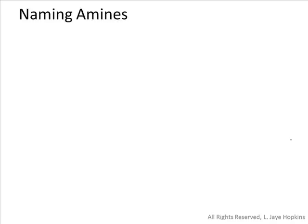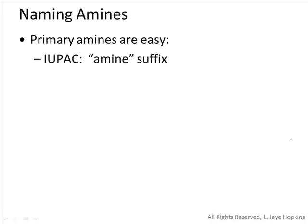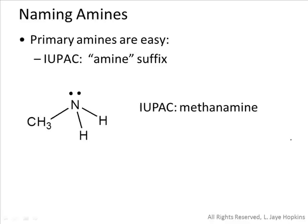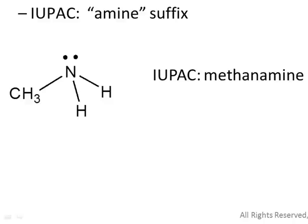Naming amines is straightforward, especially for primary amines, which are named much like alkanes but with a new suffix. The IUPAC systematic suffix for the amine functional group is 'amine.' We simply apply this suffix to the appropriate alkyl prefix. For example, a primary amine with one carbon would be called methanamine — derived from methane by removing the E and replacing it with the amine suffix.